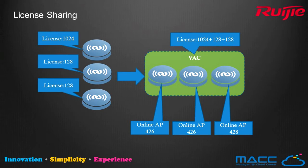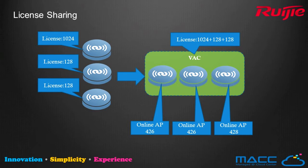Another valuable feature of virtualization technology is license sharing. Unlike HA, license keys are shared in virtualization. For example, if you have 3 controllers — one with 1,024 licenses and the others with 128 each — when configured into virtualization, the maximum license count of the VAC logical instance will be 1,024 plus 128 plus 128, totaling 1,280. APs will be equally balanced to different members due to the load balancing feature.